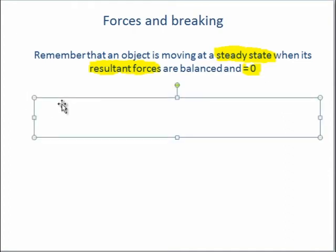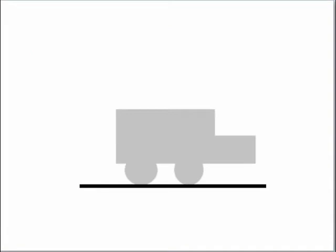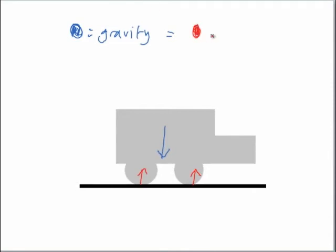When we have a car or another moving object at a steady state, gravity and reaction forces from the ground are involved and they are balanced at zero. The reaction force results from a mass pushing down on the ground — it's the force the ground exerts back on the car so it doesn't fall through the earth. So blue, which equals gravity, equals red, which equals reaction force, and these are balanced whether the car is standing still or moving.